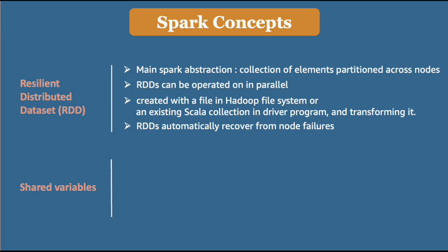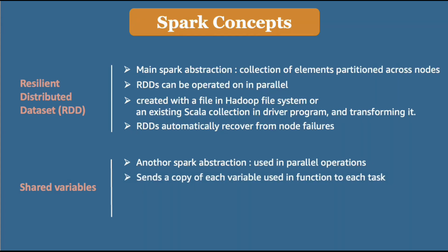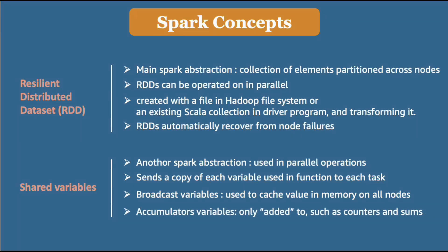One more concept is shared variables — another Spark abstraction typically used in parallel operations. Spark sends a copy of each variable used in functions running on different executors. There are two types: the first is broadcast variables, used to cache values in memory on all nodes; the second is accumulator variables, which are used only for certain functions such as counters and sums.